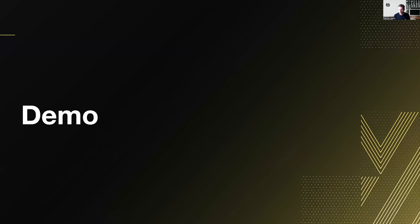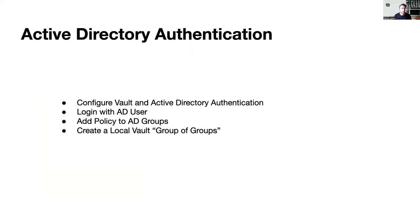We're all here for a demo. First thing we're going to do is configure Vault with Active Directory and test our logins. Then we're going to start leveraging groups and attach policies to our Active Directory groups. Lastly, we're going to create a group across two different identity providers and apply a policy across them. Let's get started.